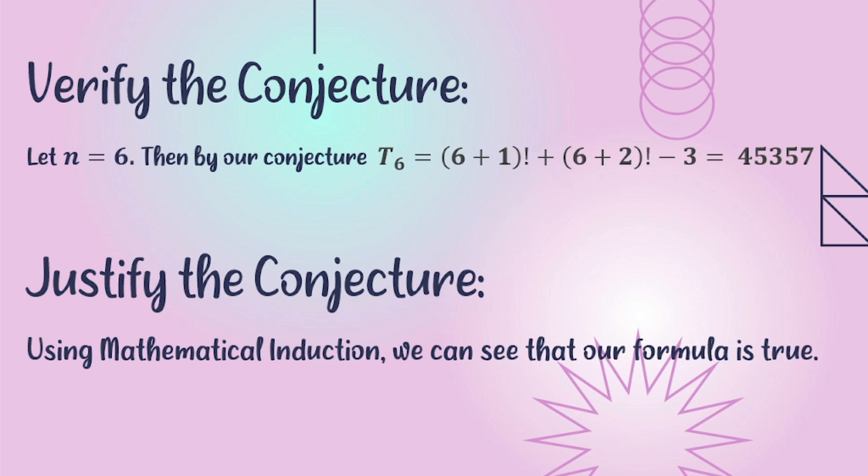Verify the conjecture. In verifying our conjecture using the formula t sub n = (n+1)! + (n+2)! - 3, we have an example here.